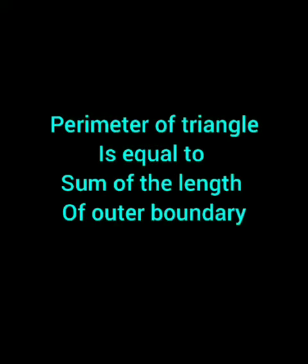Suppose anybody asks you what is the perimeter of a triangle, then you should define that perimeter means sum of the length of outer boundary. So sum of the length of outer boundary means perimeter of the triangle.